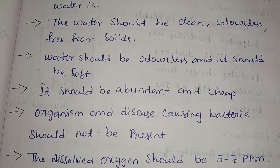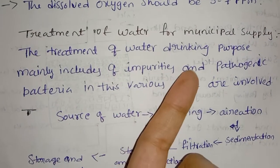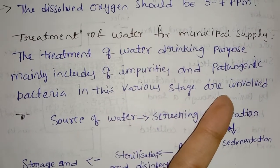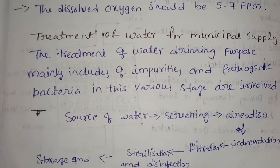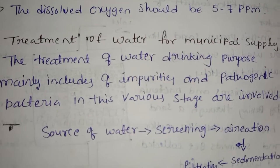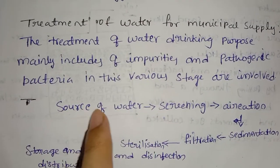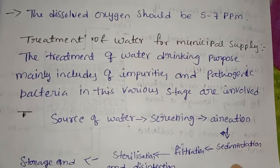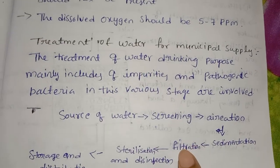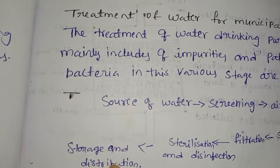Treatment for municipal supply. Treatment of water for drinking purpose mainly includes removal of impurities and pathogenic bacteria, and various stages are involved. The steps are: first, source of water; then screening; sedimentation; filtration and disinfection; and last, storage and distribution.